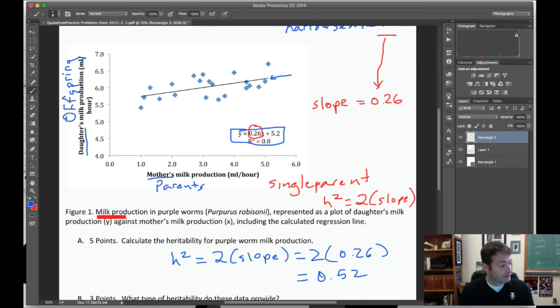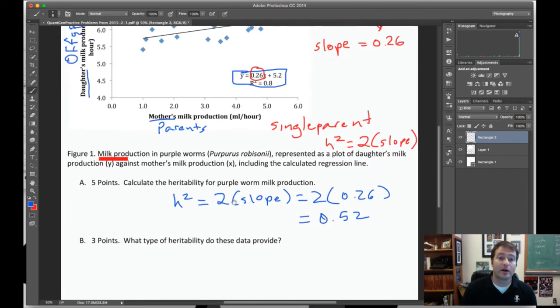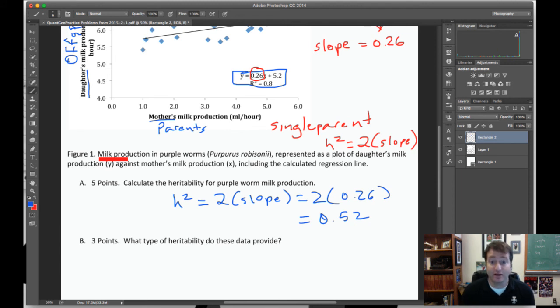That's five points. Here, we ask what type of heritability do these data provide? Well, I've taught you three types of heritability. Narrow sense, broad sense, and realized heritability. These data, parent offspring regression, rely on additive genetic variance. This is narrow sense heritability.